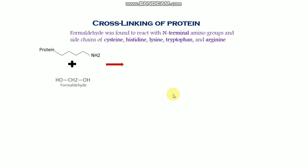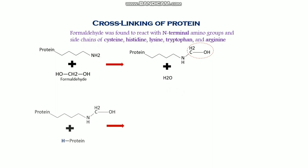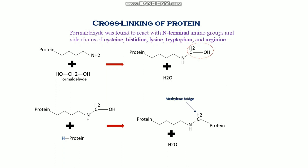Formaldehyde reacts with the protein N-terminal and forms a reactive group. When another protein comes in, a methylene bridge forms between the two proteins. Because of this methylene bridge, cross-linking occurs between proteins, and for this reason the antibody cannot bind with the epitope of the antigen.